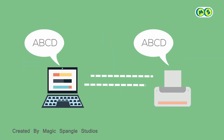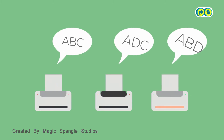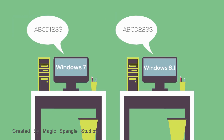Each computer component has its own way of communicating. Different models and brands of the same type of device may speak languages that are similar, but not exactly the same. Each operating system also has its own language. For example, Mac OS X speaks a very different language than Windows. Even different versions of the same basic operating system speak different languages.